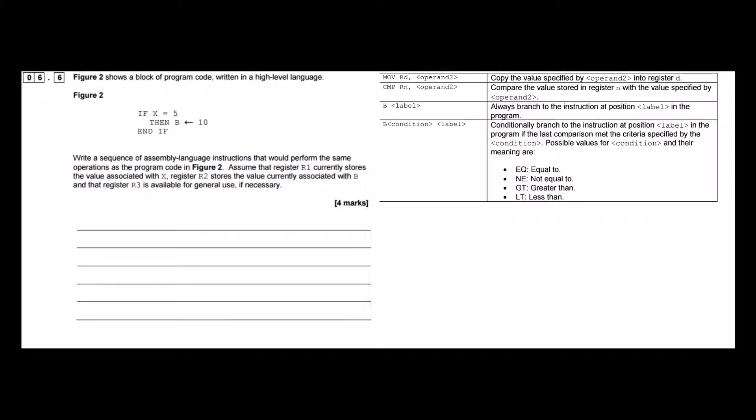So we're going to use the compare command and we're going to compare the value stored in register 1 with the value specified by this operand, and that's going to be the decimal value 5, and we specify a decimal value in this particular instruction set by doing a hash and then the value.